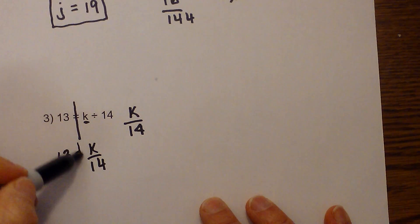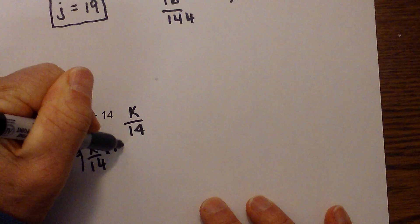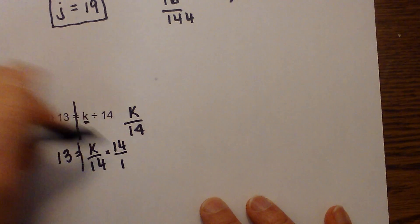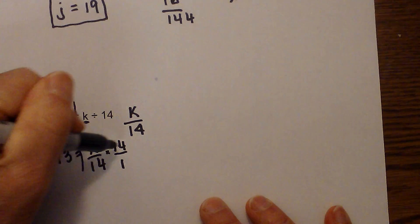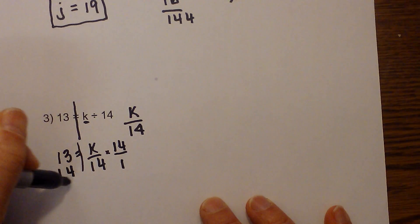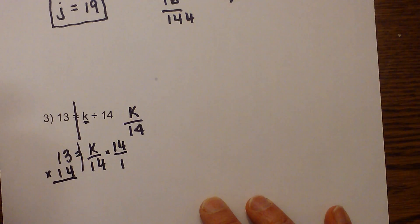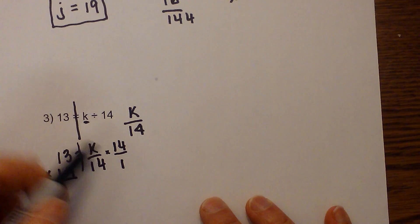Okay I'll draw the line down the middle and now to undo division I'm going to multiply, and I'm going to multiply it by 14, and I can rewrite that as 14 over 1. Okay so what I do to one side I must multiply to the other side. So now I have 13 times 14 is equal to k over 14 times 14 over 1.